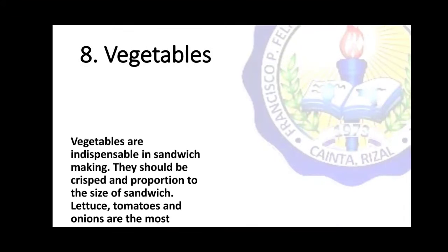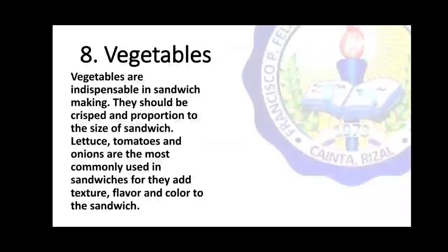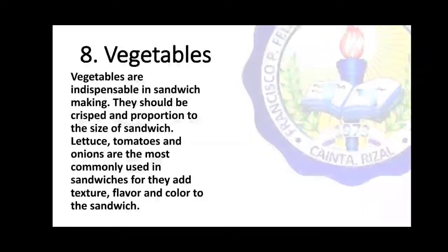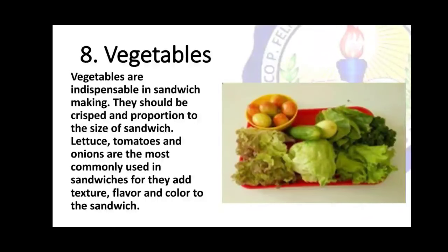Next, we have vegetables. Vegetables are indispensable in sandwich making. They should be crisp and proportioned to the size of the sandwich. Lettuce, tomatoes, and onions are the most commonly used in sandwiches, as they add texture, flavor, and color to the sandwich.